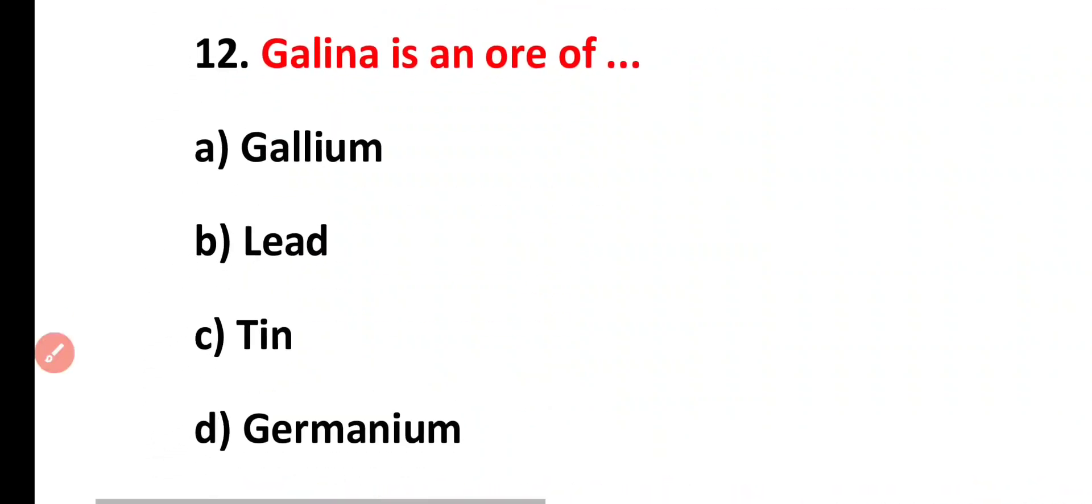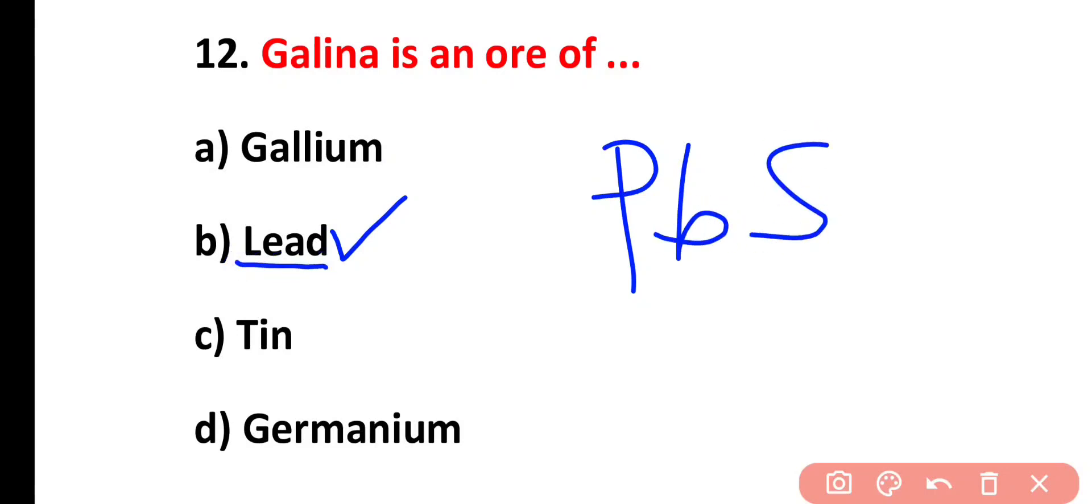Question number 12. Galena is an ore of gallium, lead, tin, germanium. Correct answer is option B. Galena which is also known as lead sulfide. It is an ore of lead.